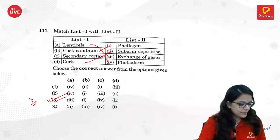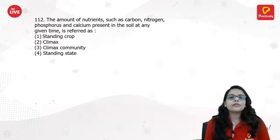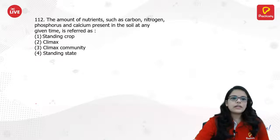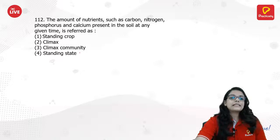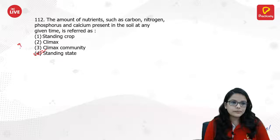The amount of nutrients such as carbon, nitrogen, phosphorus, and calcium present in any soil at any given time is referred to as: standing crop, climax, climax community, or standing state. The answer is standing state.